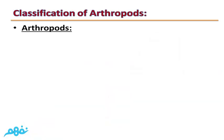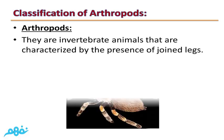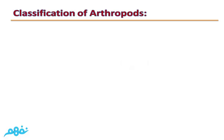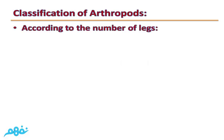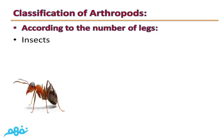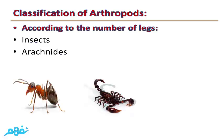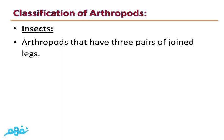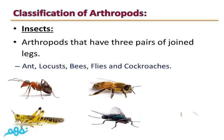Classification of arthropods: Arthropods are invertebrate animals characterized by the presence of jointed legs. They are classified according to the number of legs. Insects are arthropods that have three pairs of jointed legs, such as ants, locusts, bees, flies, and cockroaches.